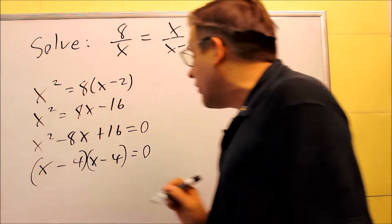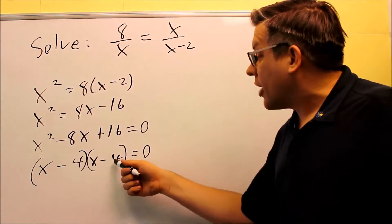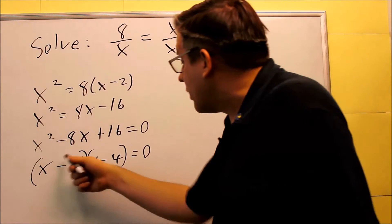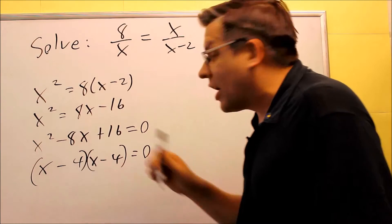In this case, they both have to be negative because negative 4 and negative 4 will give you a positive 16. But when you add them together, negative 4, negative 4, you'll get negative 8.